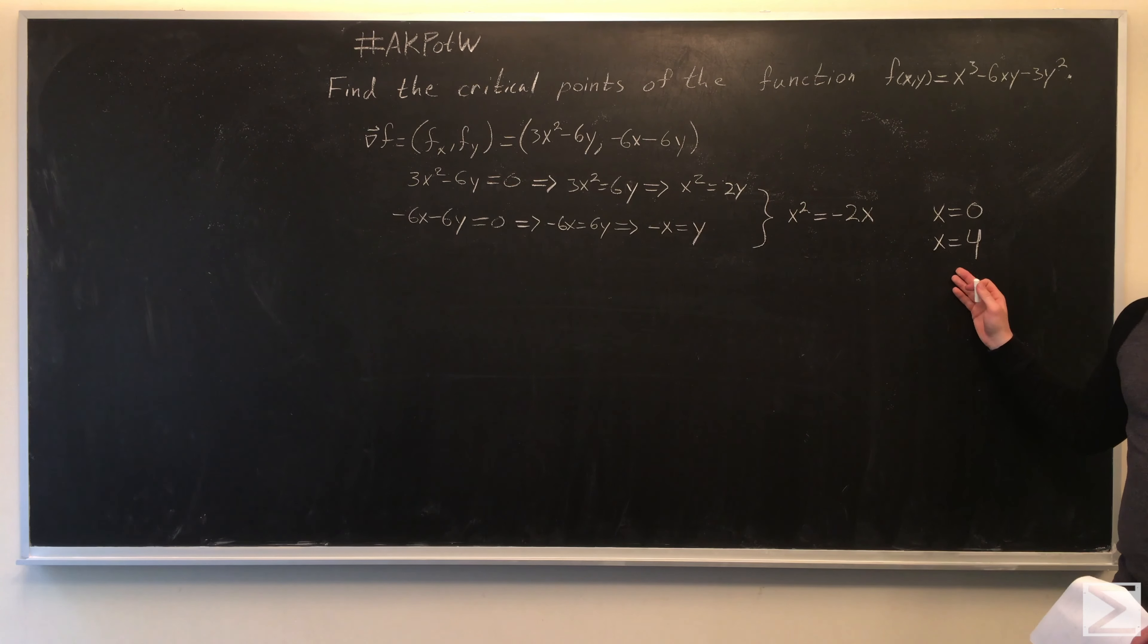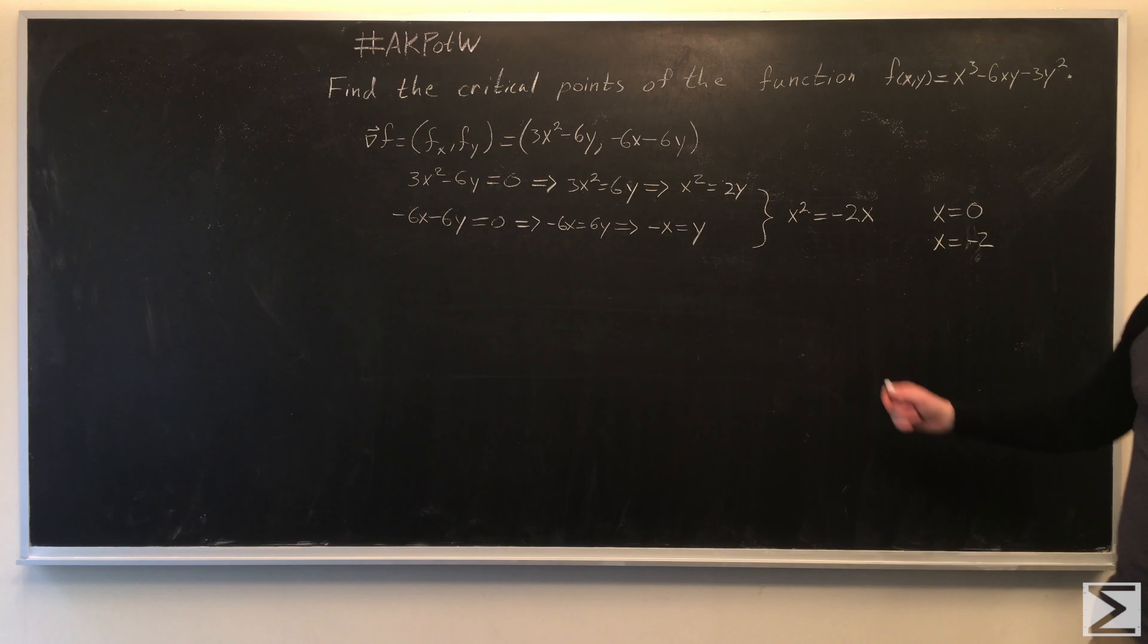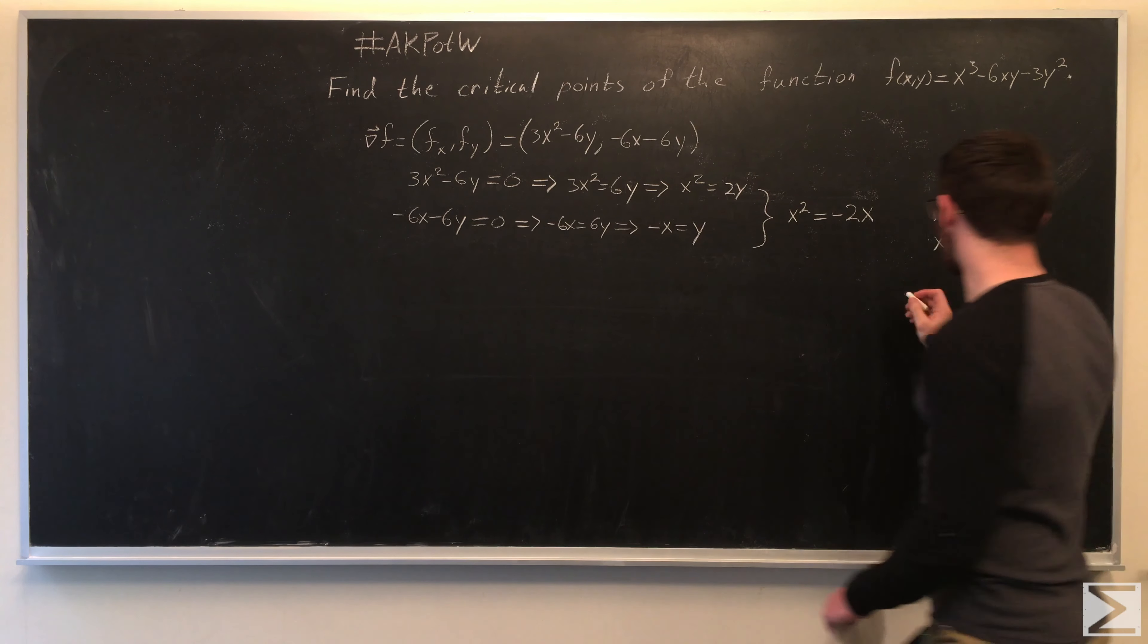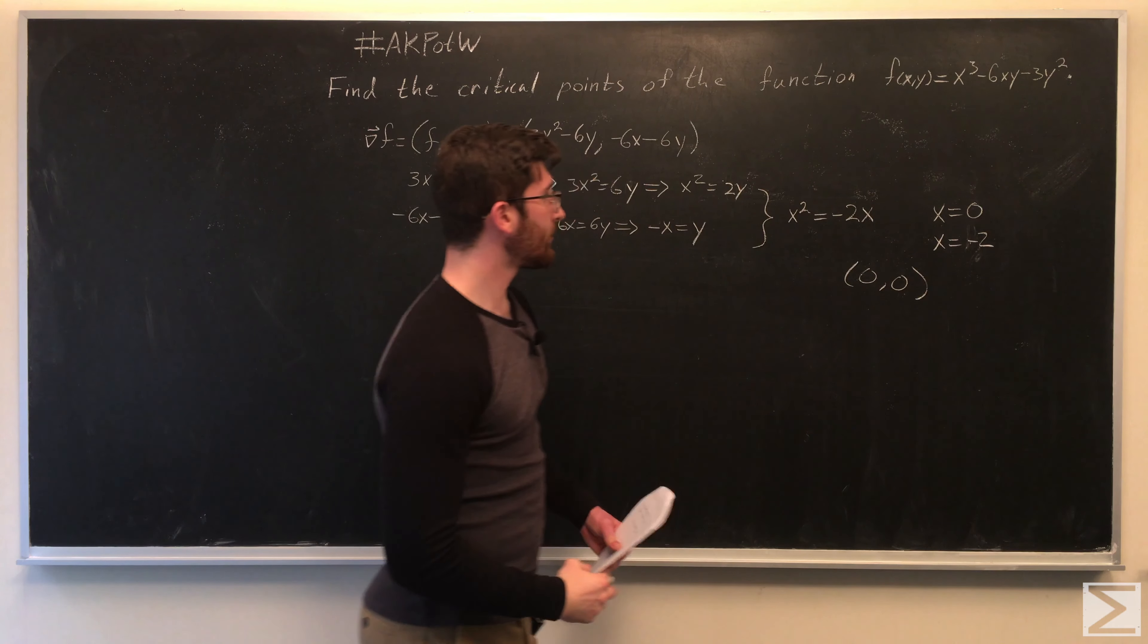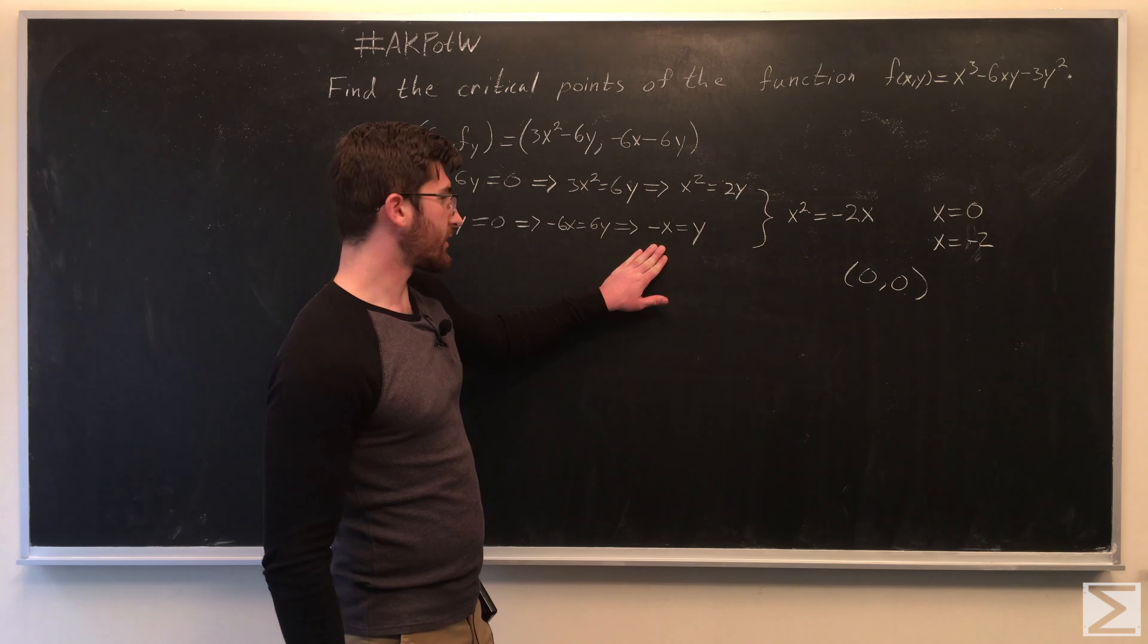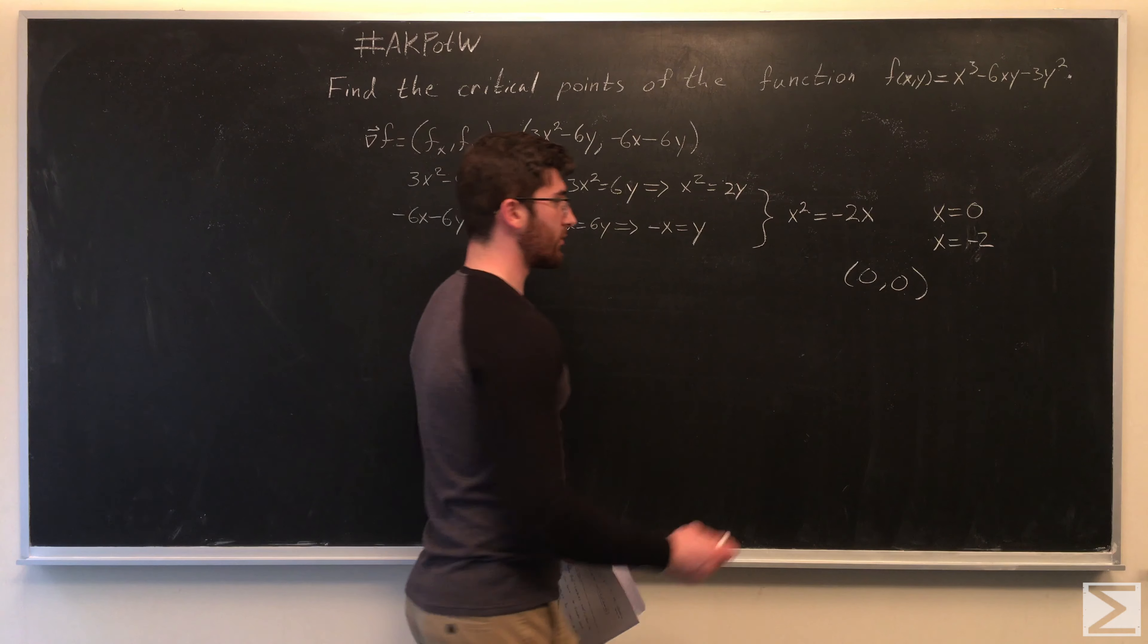So now we have x = 0 and x = -2. We just have to plug those x values in to find our y values. We know that y = -x. So our first critical point is (0, 0). When we plug in -2 for x, we get 2. So our second critical point is (-2, 2).